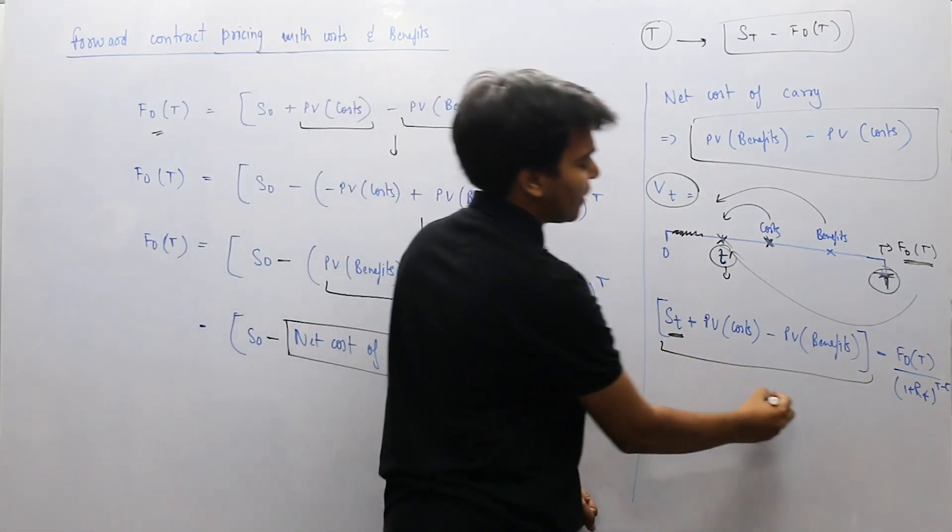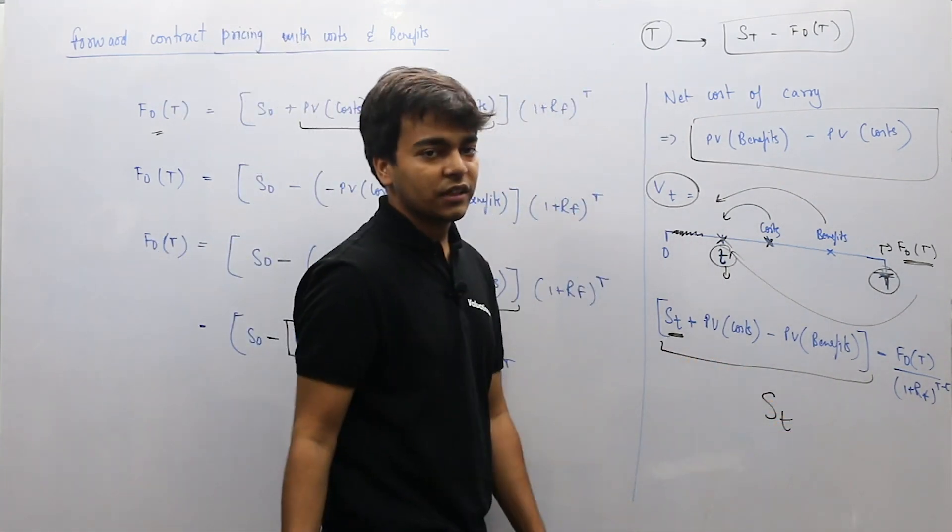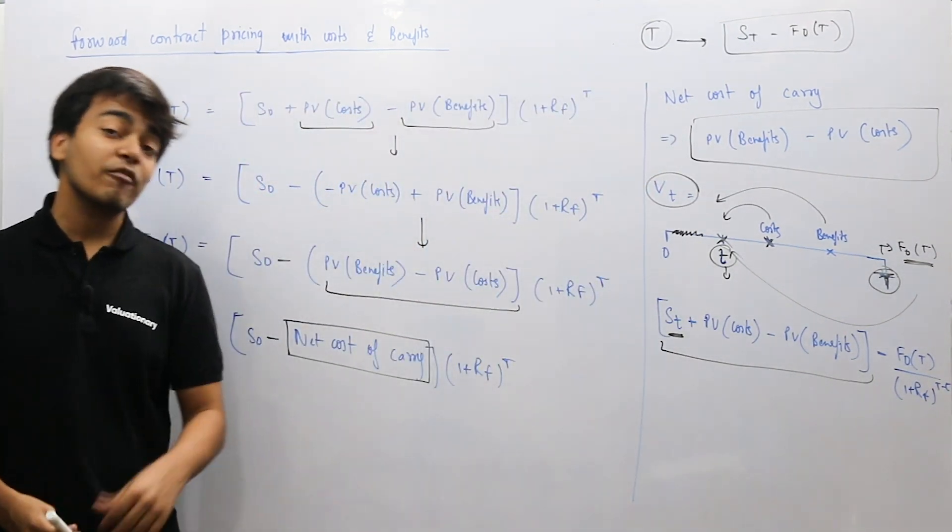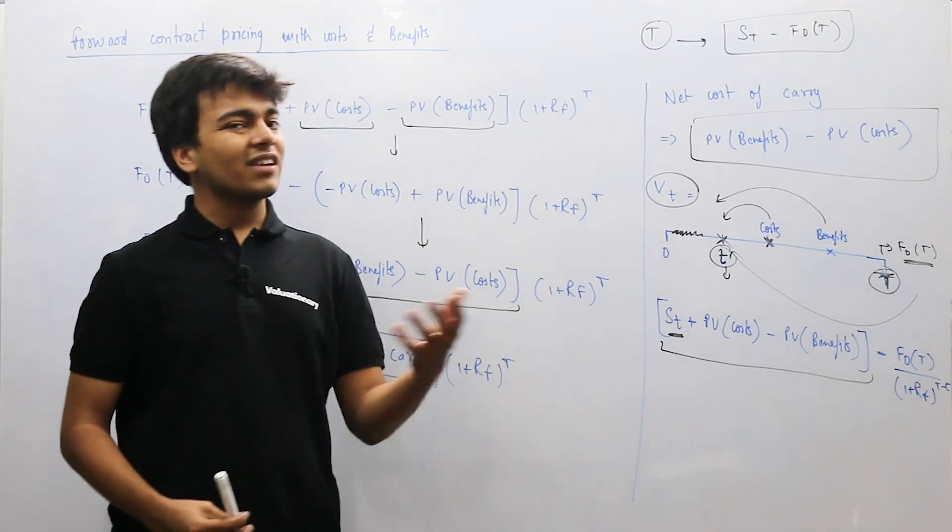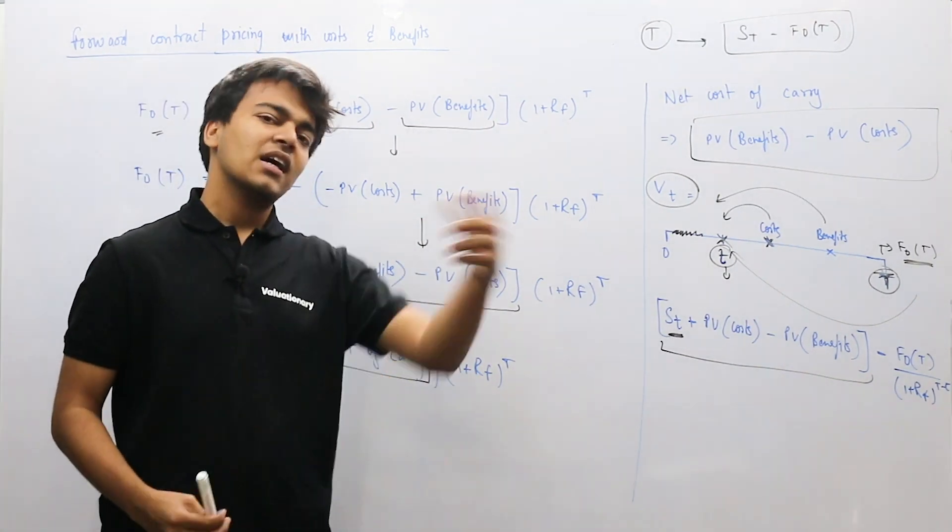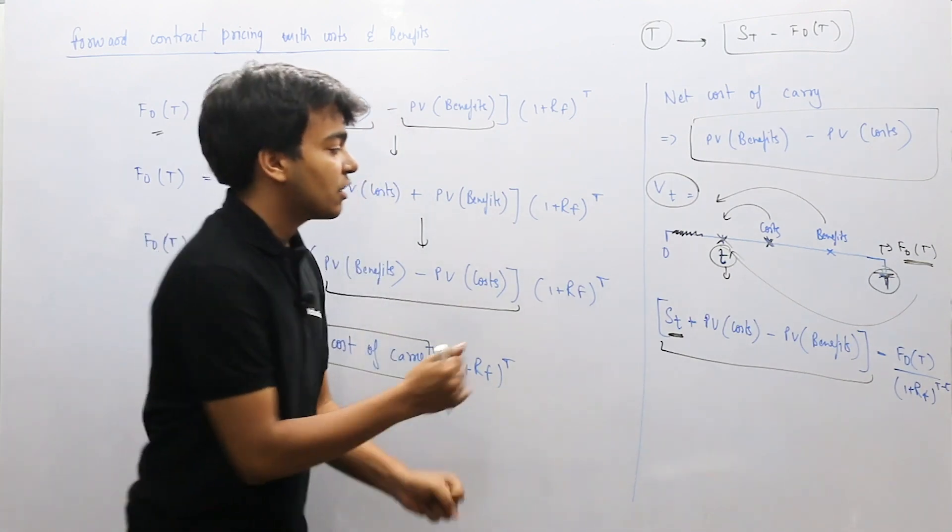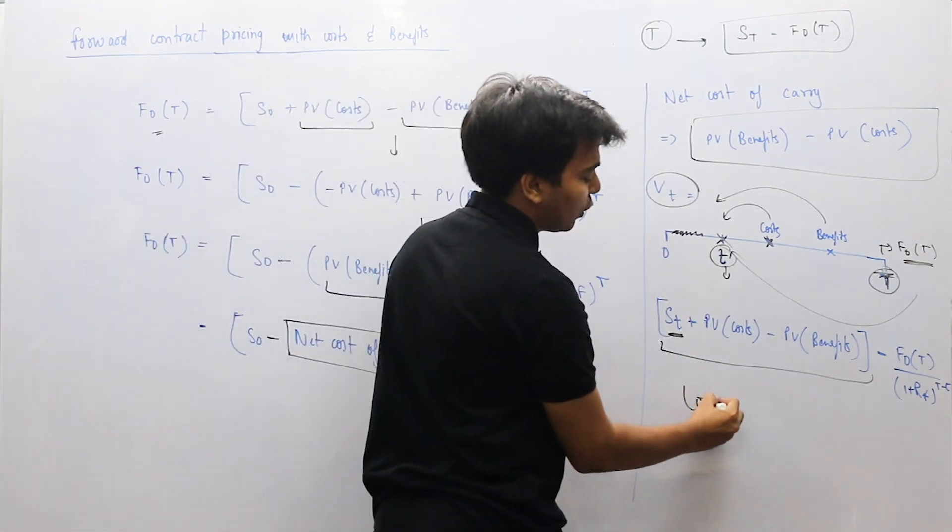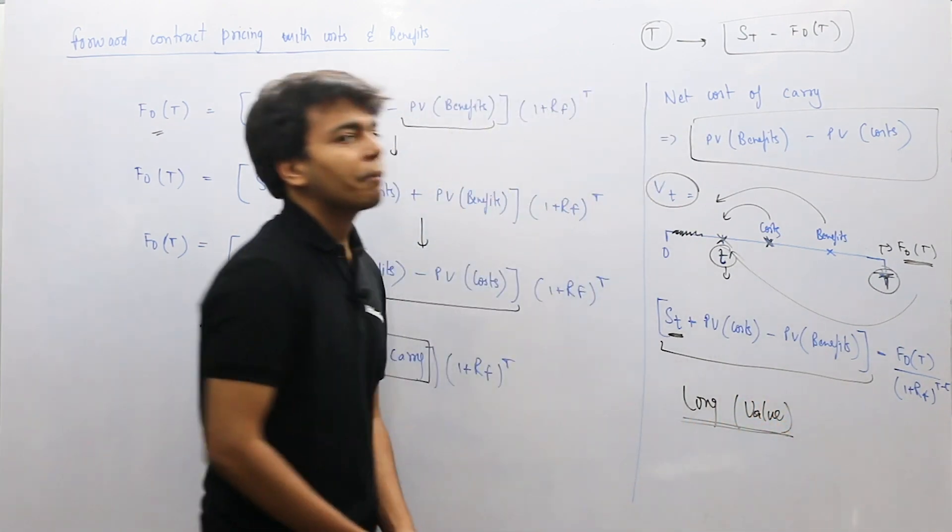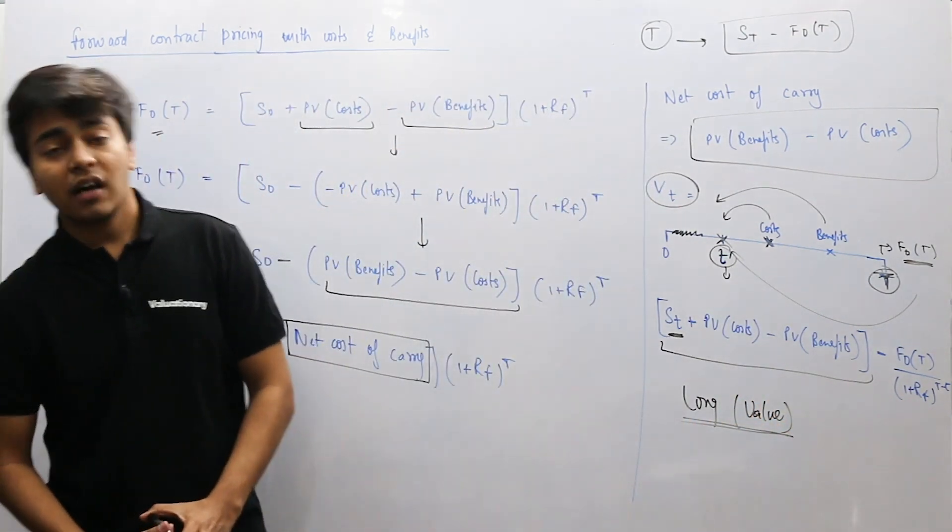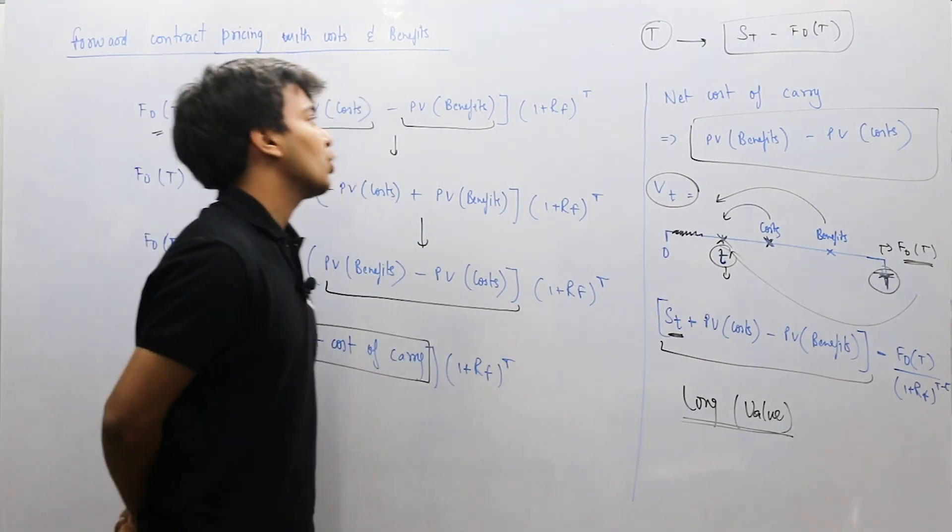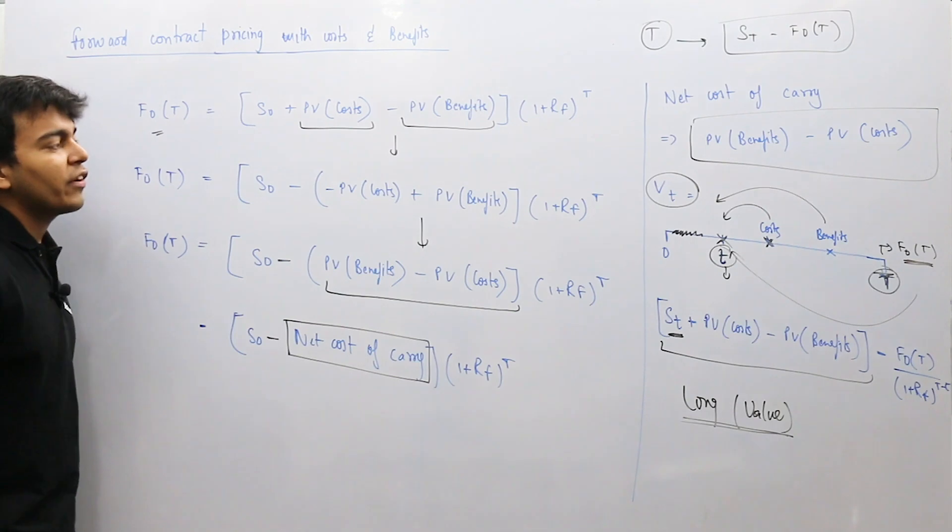Previously we just had St, because there were no costs or benefits. But in this case, we have both cost and benefits, and since we have both of them, we have to consider them in today's spot price. We bring that effect into the spot price, and then subtract the forward price from it. This will still be the value for the long party. Whatever this value is with negative sign, that becomes your short party's value.